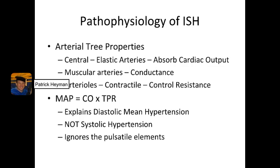Let's take a moment to talk about the arterial tree and its properties. The largest arteries are known as central arteries and they are elastic in nature. Their job is to absorb cardiac output — they're going to stretch as the heart contracts. They have a lot of elastic fibers, and these are typically going to be the aorta, the carotid, and the iliac arteries.